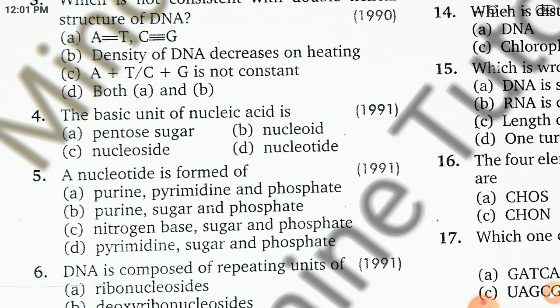Nucleic acid was first discovered by a scientist named Miescher, who discovered it as 'nuclein'.